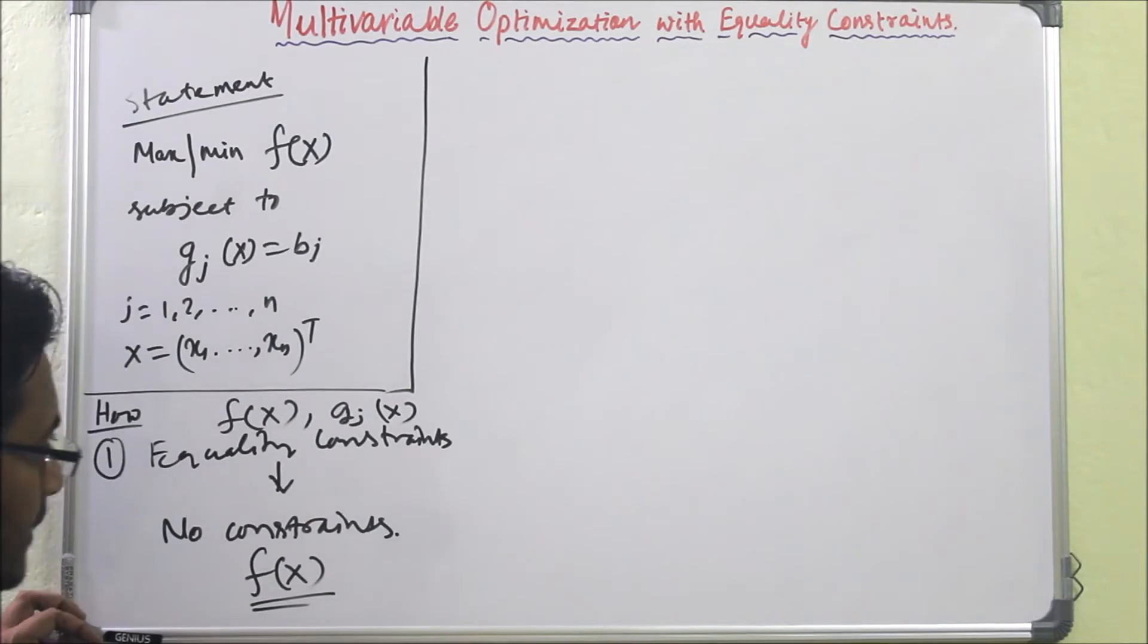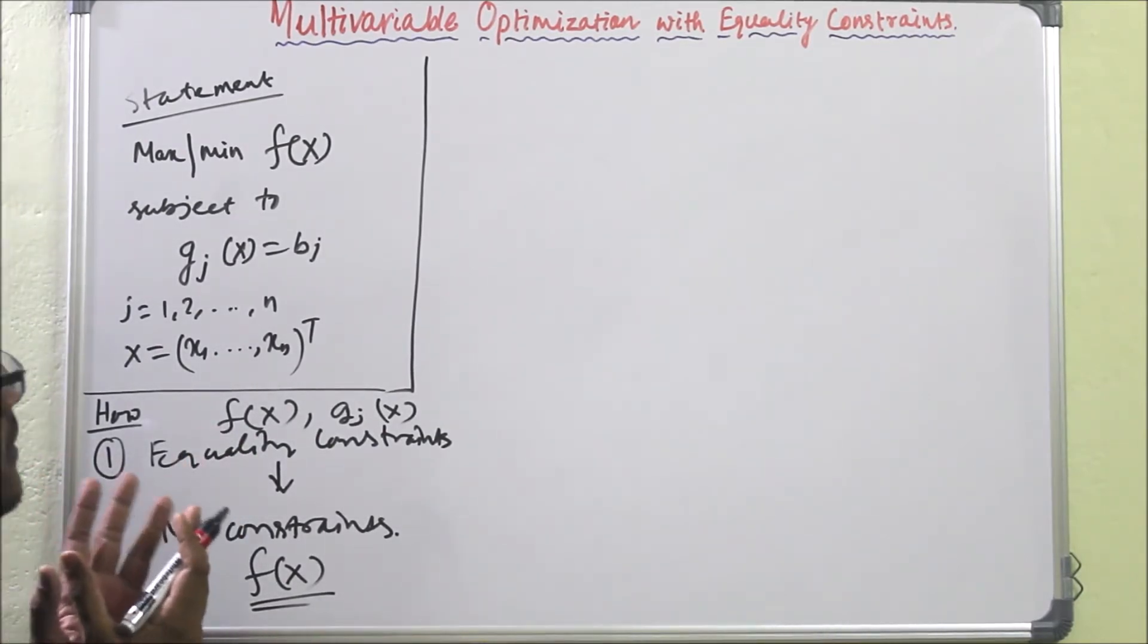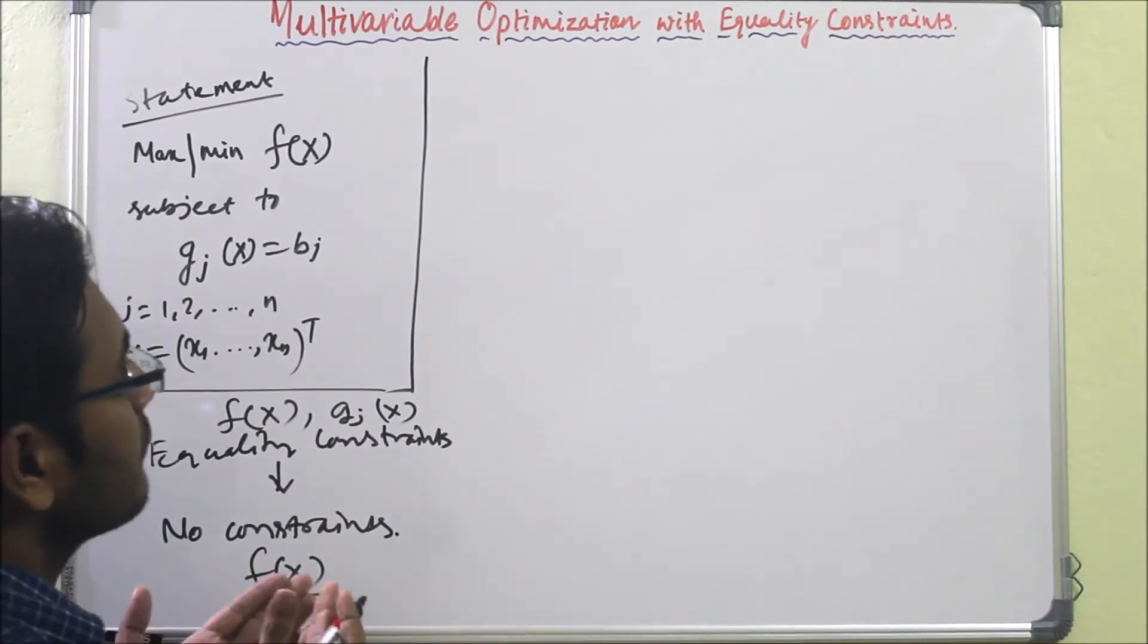So first we will see the classical method or classical approach: how to find the multivariable optimization problem with equality constraints.